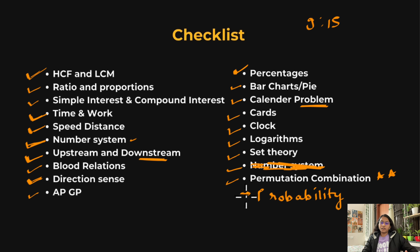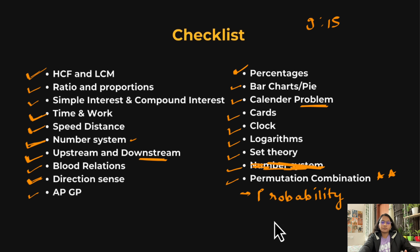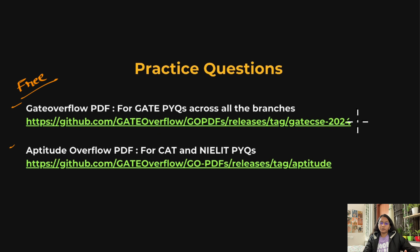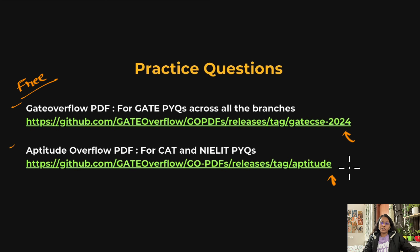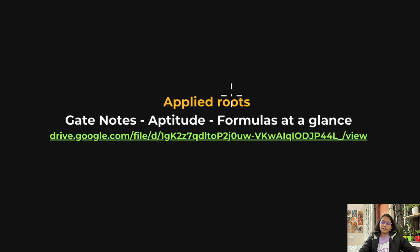For free practice resources: the first is the GATE Overflow PDF, where you can find topic-wise GATE PYQs for all branches. I will provide the links in the description. The second is the Aptitude Overflow PDF — if you have time and want to practice more, you can use previous year questions from CAT and NILAT. I'll also show you how to download and use these PDFs.